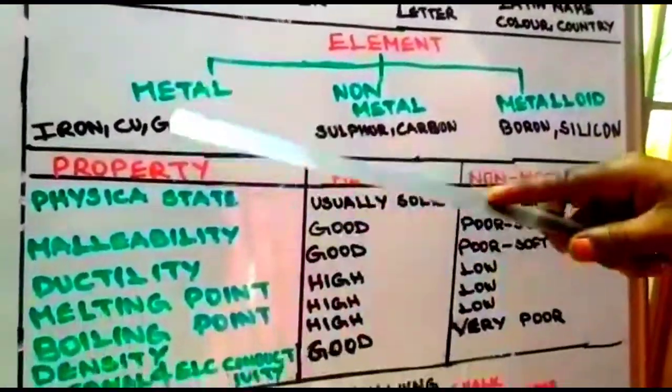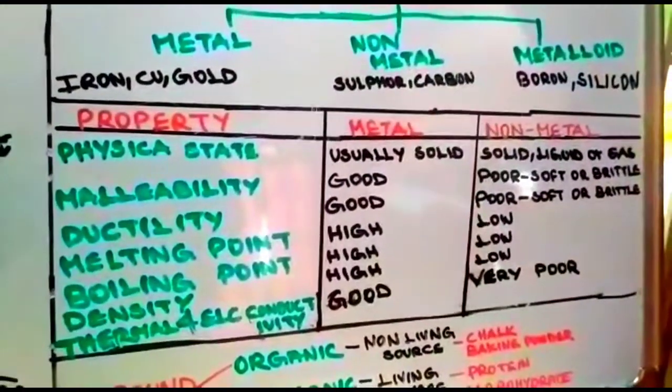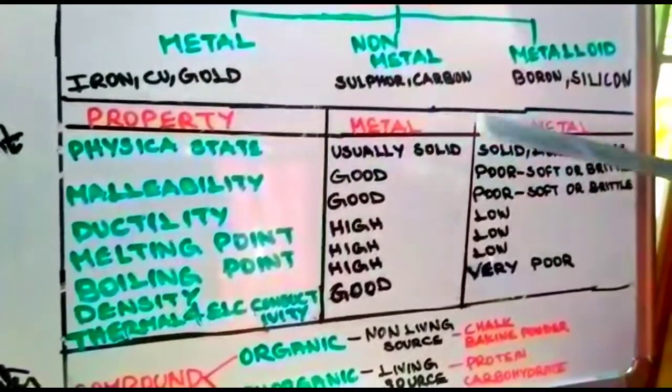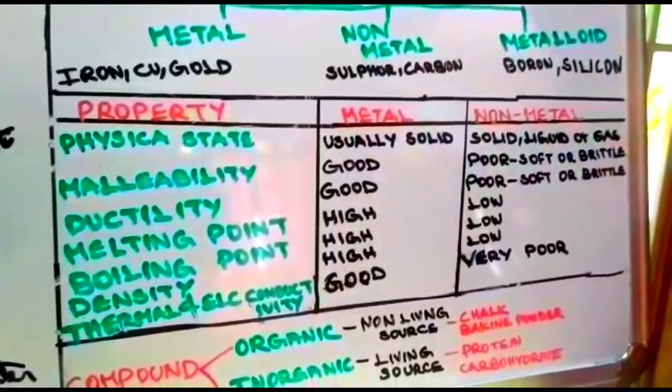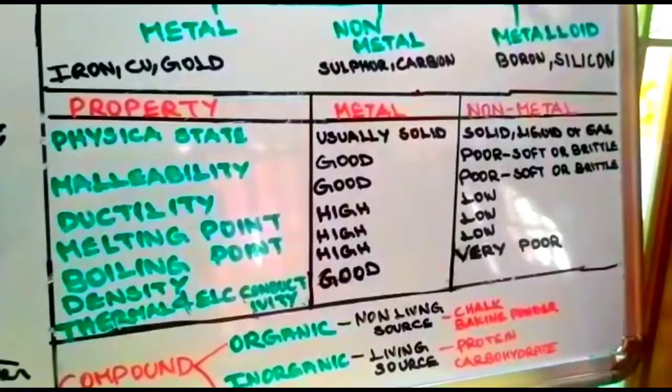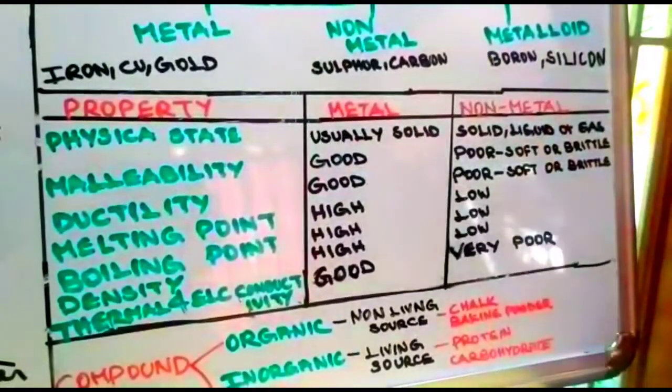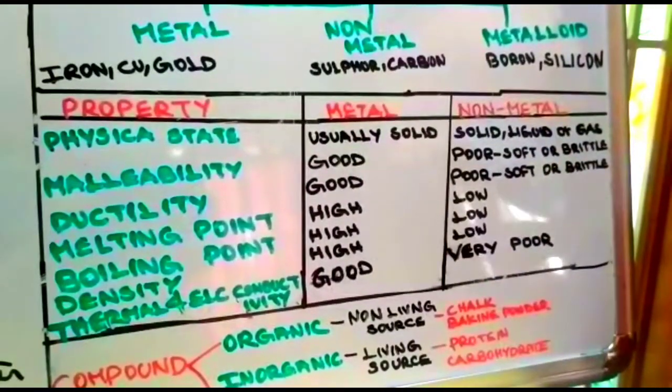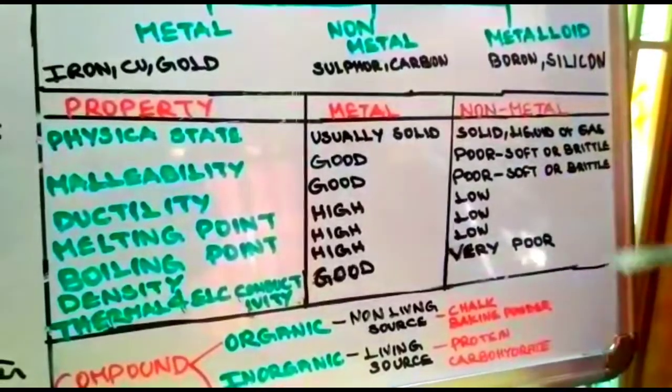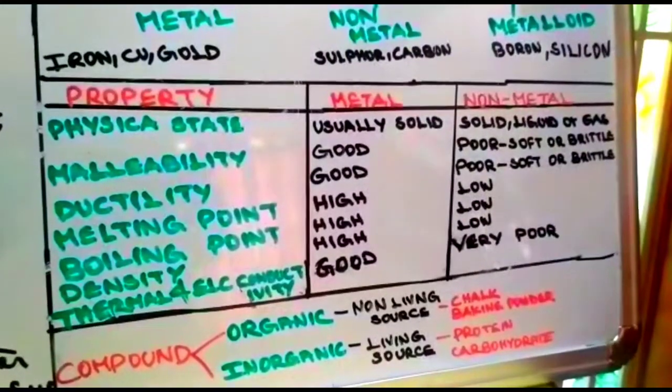Now we are going to see the properties of metal and non-metal. The physical state of metal is usually solid, very rarely liquid. Whereas non-metal may be in solid, liquid, or gaseous state. Malleability is when you hammer it and it can be formed into a thin sheet. This ability for metal is very good, whereas for non-metal it is very poor—the sheet may be soft or brittle and may break.